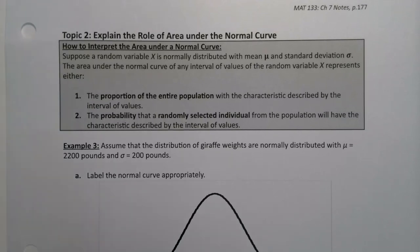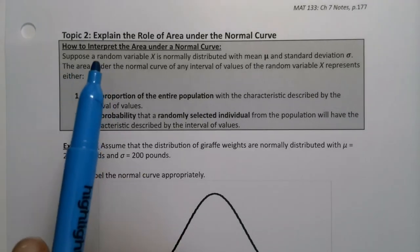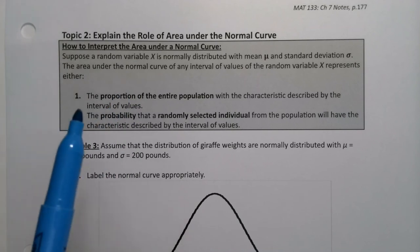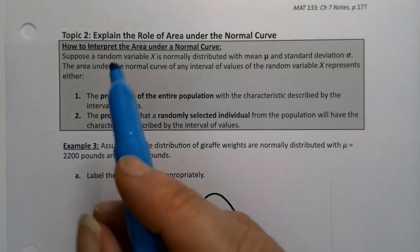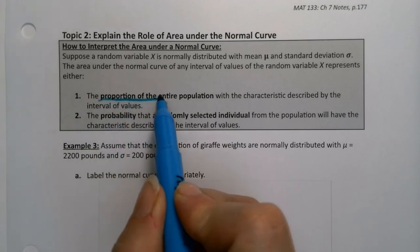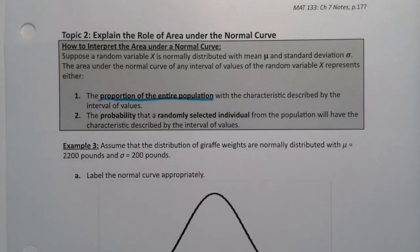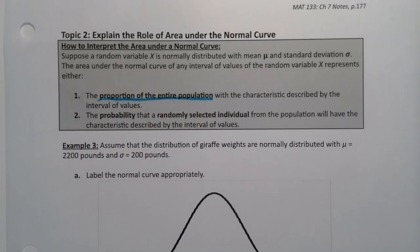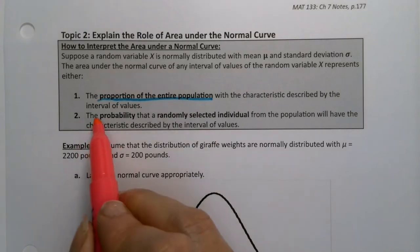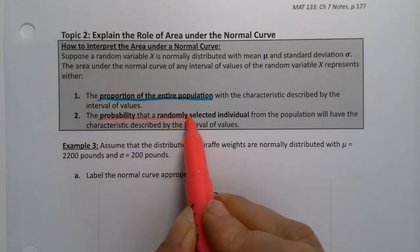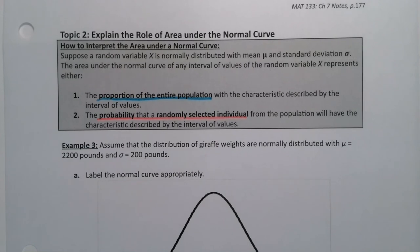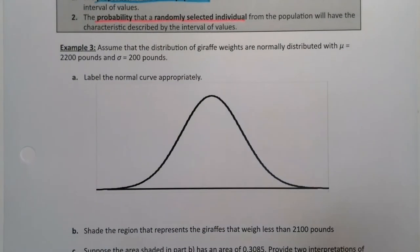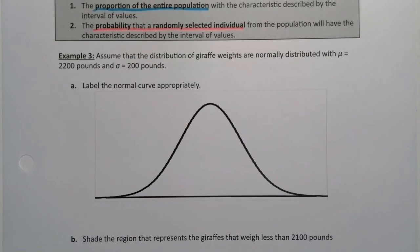For the last piece of section 7.1, we want to explain how to interpret the area under a normal curve. There are really two main interpretations. You can think of it as the proportion of the entire population with the characteristics described by the interval values, or you can think of it as the probability that a randomly selected individual from the population will have that characteristic described by the interval values. It's just a little bit different in your way of thinking about it and interpreting it.